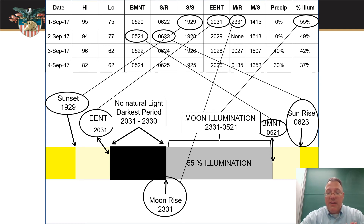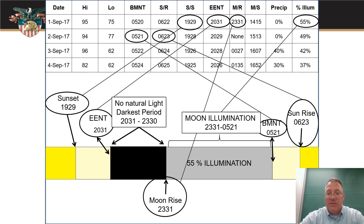I want to emphasize again that you really have to pay attention to moon illumination times because they slide around. You could have a dark period after the moon sets — that's what MS (moonset) is. This table lays out all the times for your mission and lets you know when it's going to be dark, when you'll have some light to see by, and how much moonlight is going to be out there.